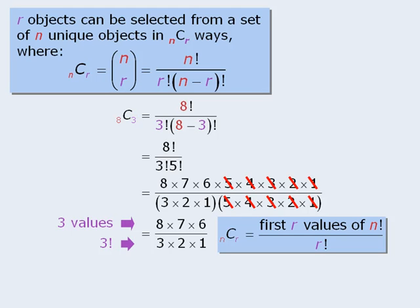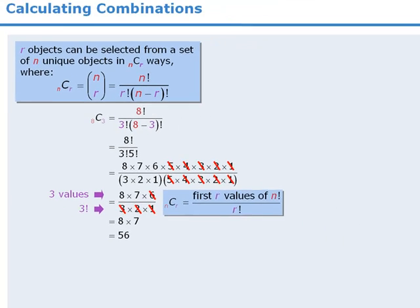OK, now let's continue with our calculations. We can further simplify this fraction by recognizing that we can cancel the 6 in the numerator with the product 3 times 2 times 1 in the denominator. When we do this we get 8 times 7, which equals 56. So 8 choose 3 is equal to 56.